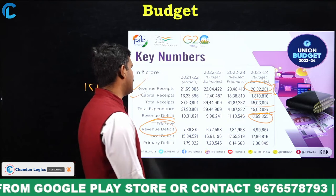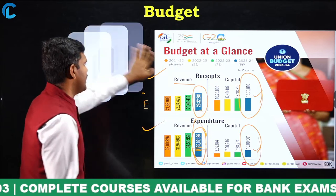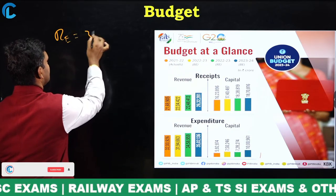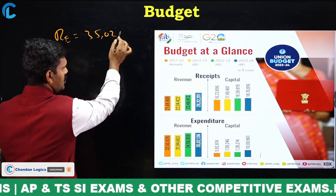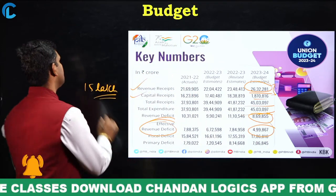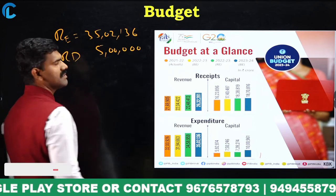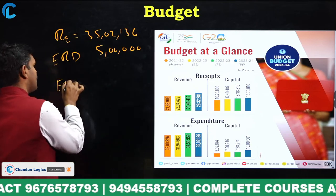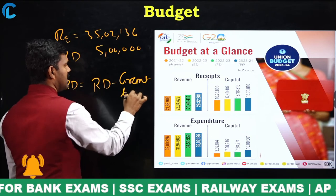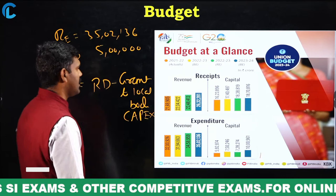Revenue expenditure is 35 lakh 2,136 crores. The effective revenue deficit is around 4 lakh 99,000 crores — roughly 5 lakh crores. Effective revenue deficit equals revenue deficit minus grants to states for capital expenditure (capex). The revenue deficit is 8 lakh 69,000 crores. If we subtract approximately 5 lakh crores (effective revenue deficit), the difference of 3 lakh 69,000 crores represents the grants to states for capital expenditure.